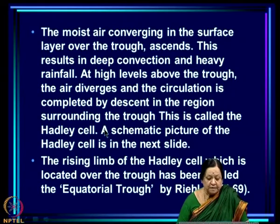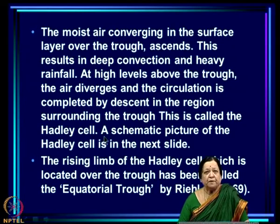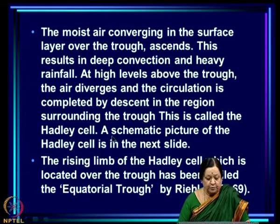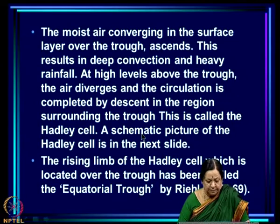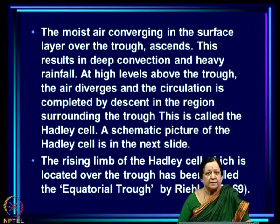The moist air converging in the surface layer over the trough ascends, resulting in deep convection and heavy rainfall. At high levels above the trough the air diverges, and the circulation is completed by descent in the surrounding region. This is called a Hadley cell.